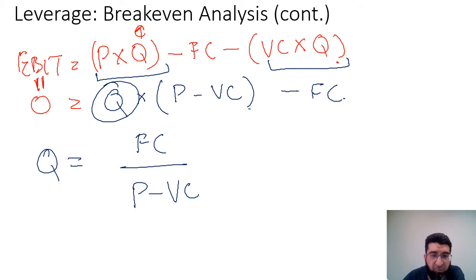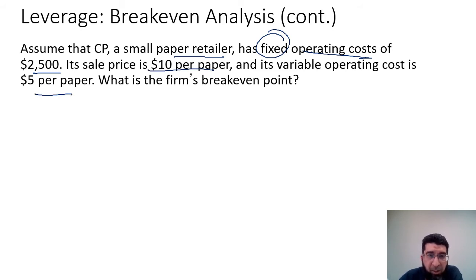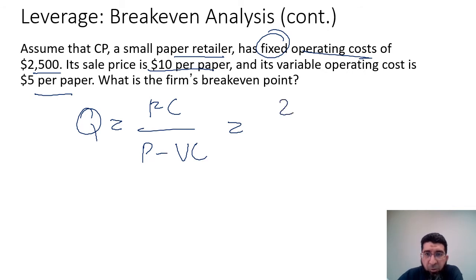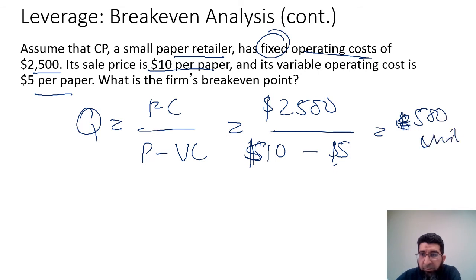Let's do an example. Assume CP, a small paper retailer, has fixed operating costs of $2,500, a sale price of $10 per paper, and a variable operating cost of $5 per paper. The break-even quantity is Q = FC ÷ (P − VC) = $2,500 ÷ ($10 − $5) = 500 units. This is the number of units required to break even.